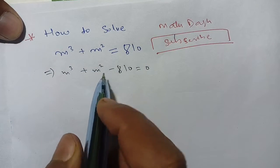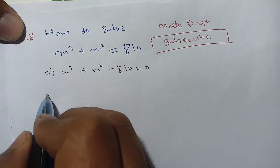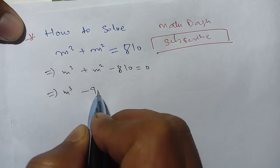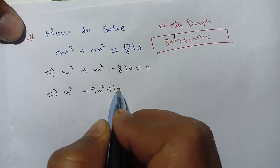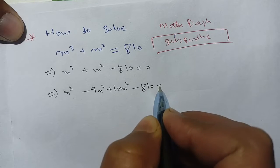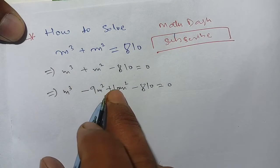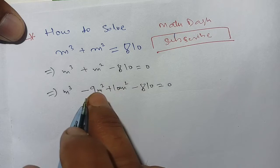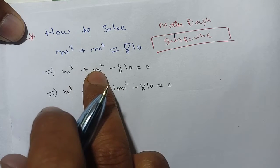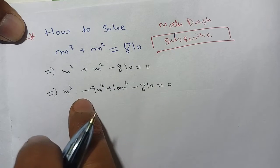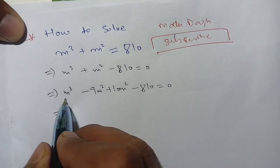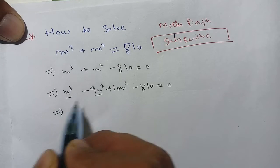We further break down the middle terms such that m³ - 9m² + 10m² - 810 = 0. When we subtract 10m² - 9m², it becomes m².